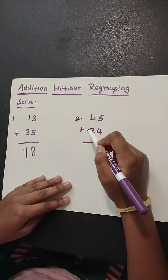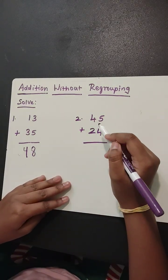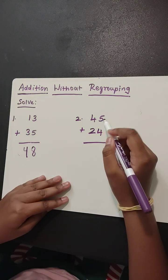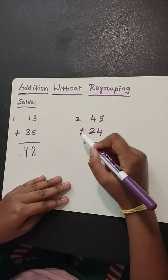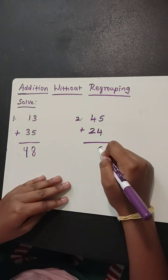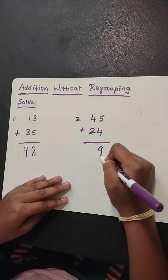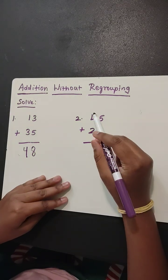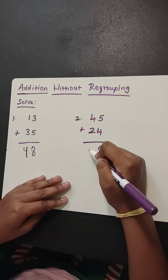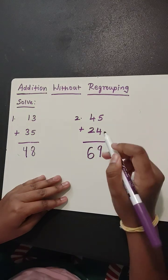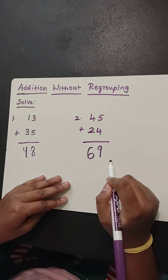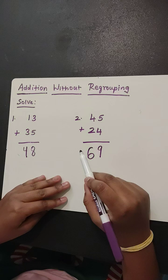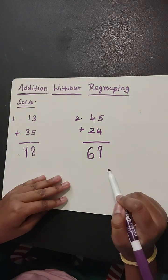45 plus 24. Add the ones place: 5 plus 4 equals 9. Then add the tens place: 4 plus 2 equals 6. The answer is 69. 45 plus 24 equals 69.